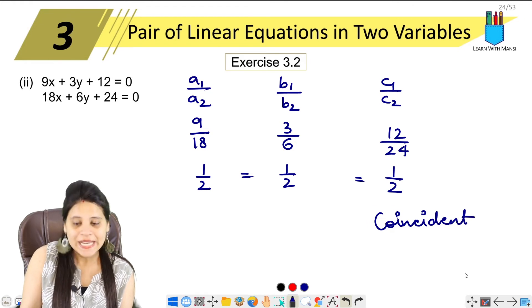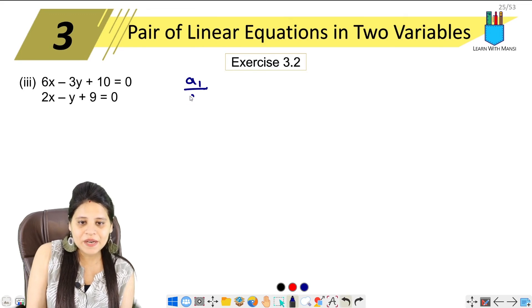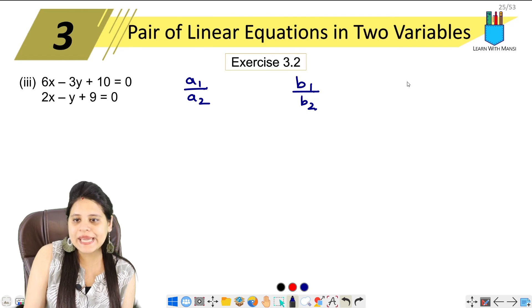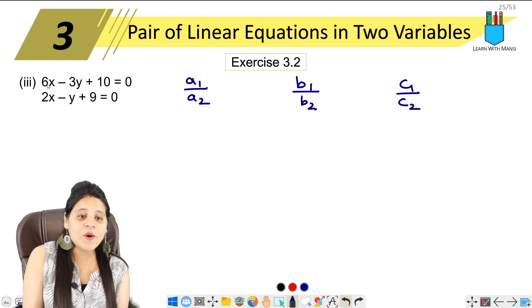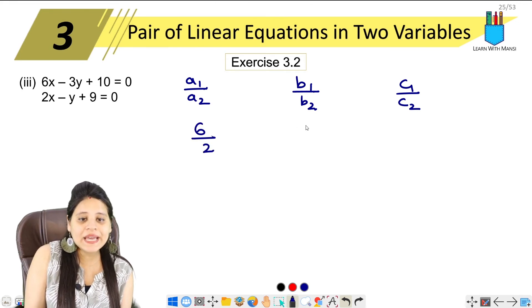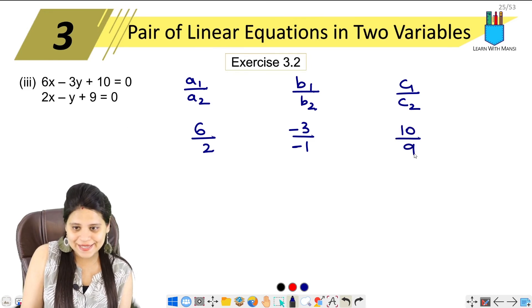This is the third part, the last part. Again, a₁ upon a₂, then b₁ upon b₂, then c₁ upon c₂. a₁ is 6, a₂ is 2, b₁ is minus 3, b₂ is 1, c₁ is 10, and c₂ is 9.